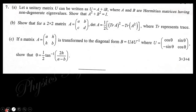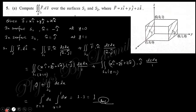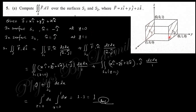Let's start the solution of Question 5, which says: compute the surface integral over surface S1 and surface S2 over this vector. For S1, the outer surface unit normal is n-cap equals minus j-cap, and y equals zero. For S2, y equals one, and the unit normal vector on the surface is n-cap equals j-cap.